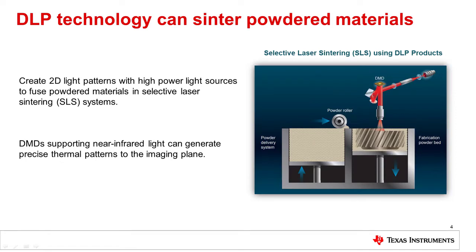Selective laser sintering, also known as SLS, is another 3D printing method that can be enabled by DLP technology. This method is ideal for complex geometries, including interior features, undercuts, and thin walls. The final mechanical traits of sintered objects can have strength similar to injection molded parts. Traditional methods of SLS use laser beam steering solutions to thermally fuse powder particles and build object layers one point and one layer at a time. DLP chipsets enable generation of 2D light patterns using near-infrared wavelengths to melt a single object layer all at once, rather than point by point.